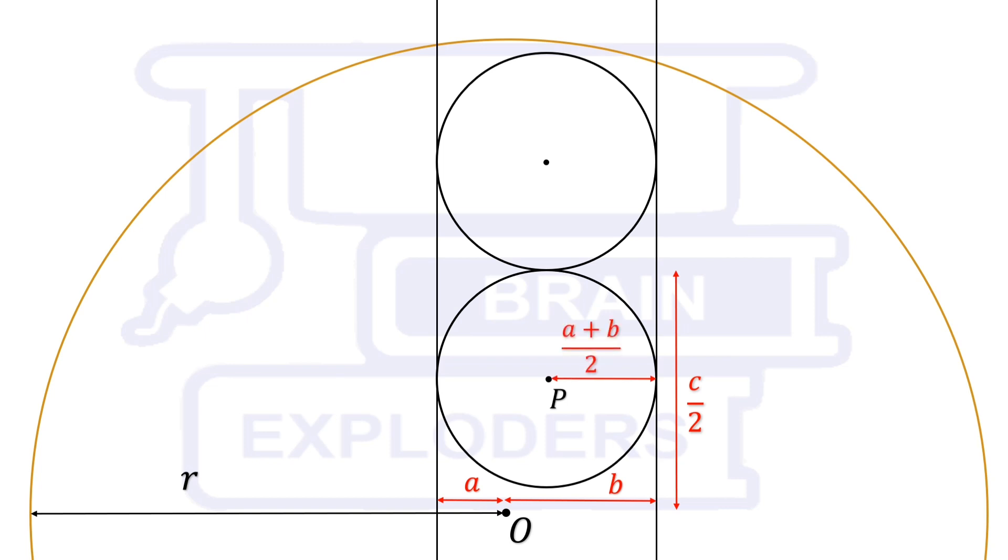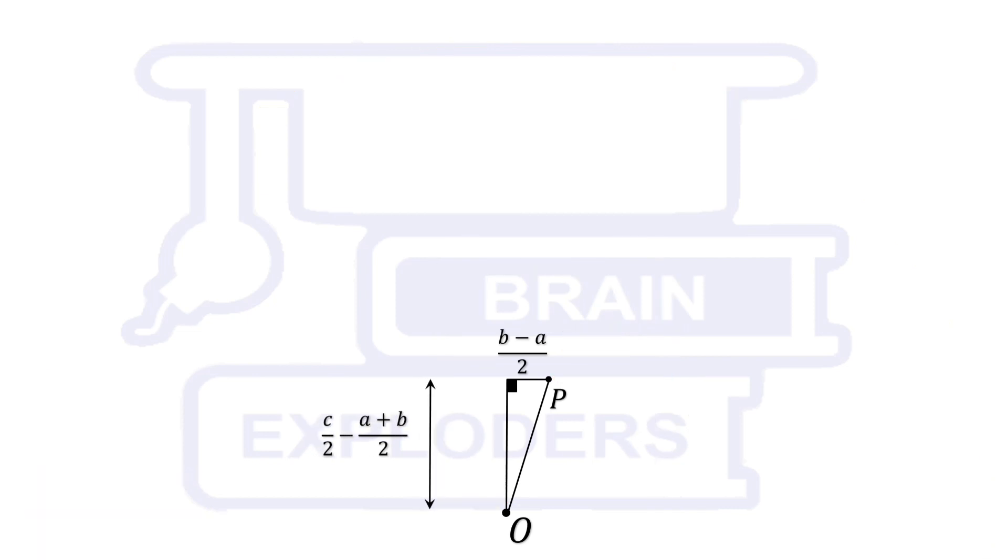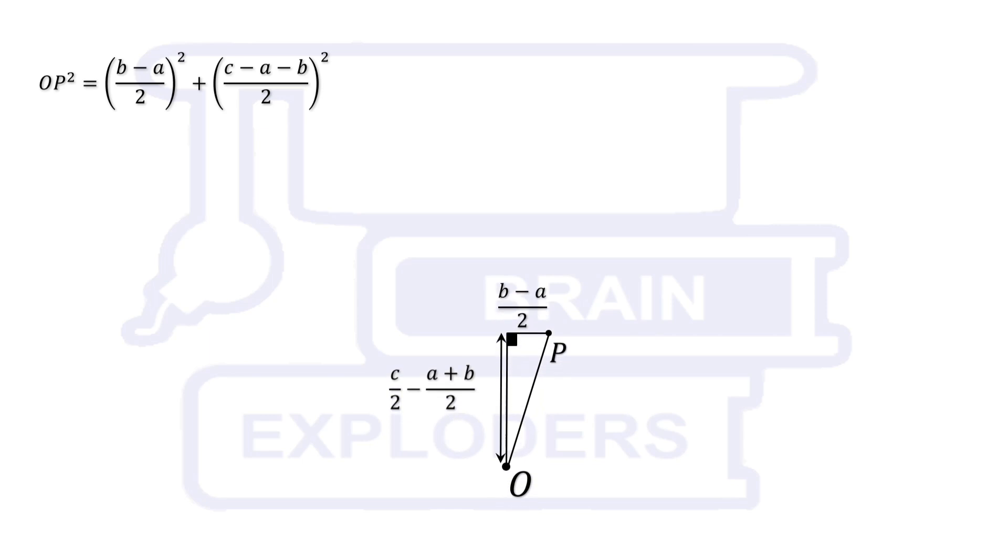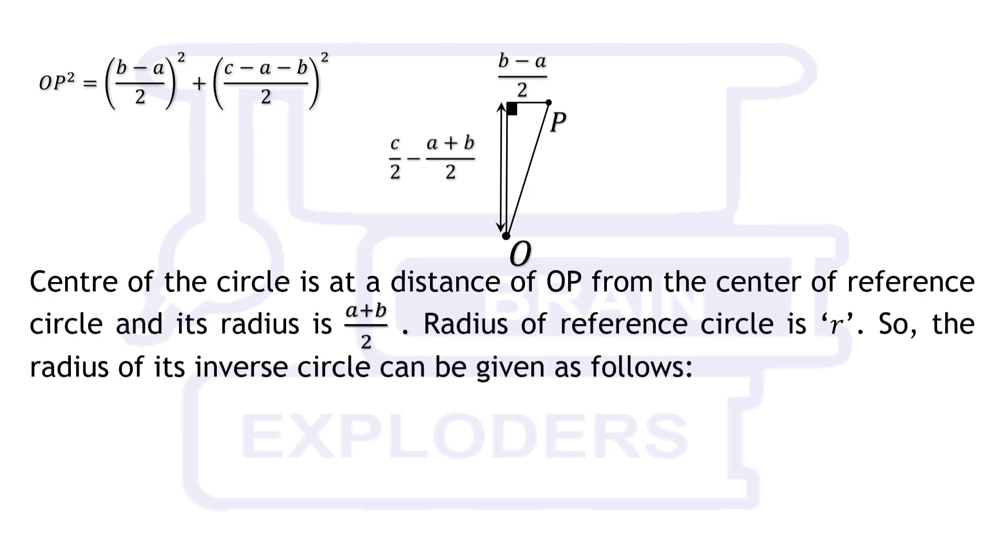Horizontal distance between o and p can be calculated by subtracting this radius from b and vertical distance between o and p can be obtained by subtracting this from c by two. These two obtained lengths and op are together forming right-angled triangle. It implies that op squared is equal to b minus a by two whole squared plus c minus a minus b by two squared. Center of the circle is at a distance of op from the center of reference circle and its radius is half a plus b.